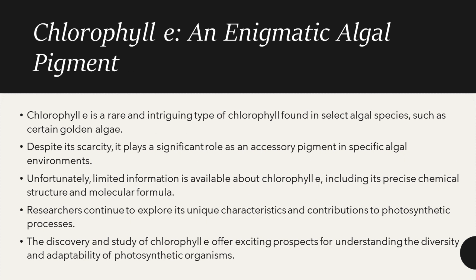From all types of chlorophyll, chlorophyll E is an enigmatic algae pigment. Chlorophyll E is a rare and intriguing type found in select algae species, such as certain golden algae. Despite its scarcity, it plays a significant role as an accessory pigment in specific algae environments. Unfortunately, limited information is available about chlorophyll E, including its precise chemical structure and molecular formula. Researchers are continuing to explore its unique characteristics and contributions to photosynthetic processes. The discovery and study of chlorophyll E offers exciting perspectives for understanding the diversity and adaptability of photosynthetic organisms.